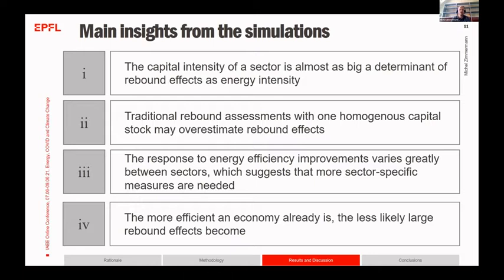We also found that the more efficient an economy already is, the less likely large rebound effects become, as seen in the decreasing trend of rebound effects over time for all non-energy sectors. When we tried a higher energy efficiency improvement than 2.2 percent, the effect in the first year is comparatively small compared to our main scenario but then decreases even stronger, hinting at a decreasing marginal benefit of each energy efficiency improvement and a smaller rebound effect in the long term.